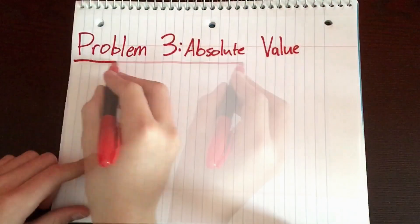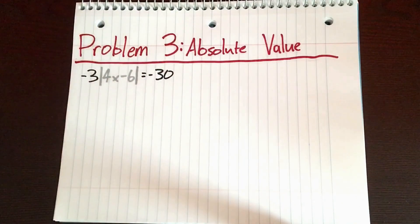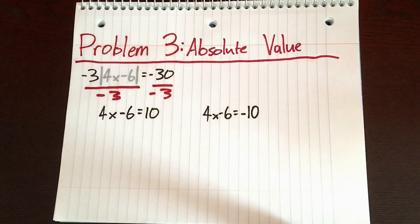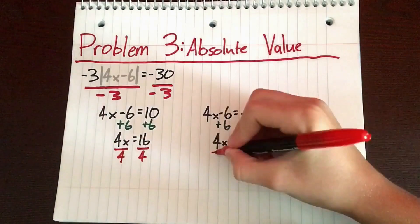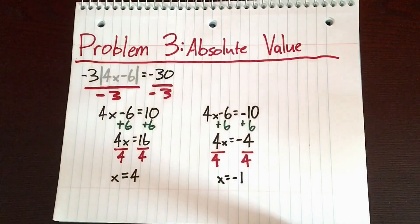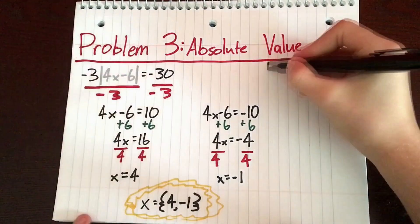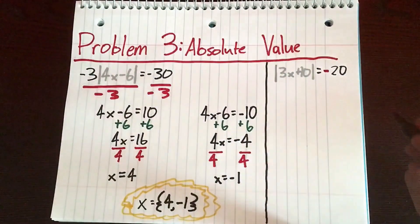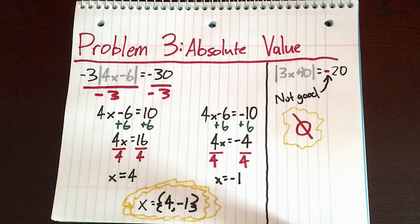For our third problem, we have absolute values. We have negative 3 times the absolute value of 4x minus 6 equals negative 30. We need to isolate the absolute value, so we divide both sides by negative 3, which gives us the absolute value of 4x minus 6 equals 10. From here, we solve both cases: 4x minus 6 equals 10, and 4x minus 6 equals negative 10. Adding 6 to both sides gives us 4x equals 16 and 4x equals negative 4. Dividing by 4, x equals 4 and x equals negative 1, so our answer is {4, -1}. If the isolated value already equals a negative, the answer is just 0 because we can't proceed.